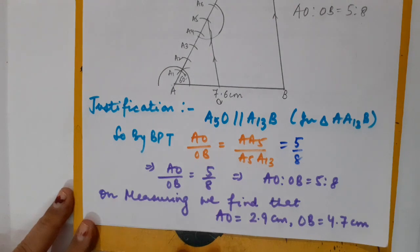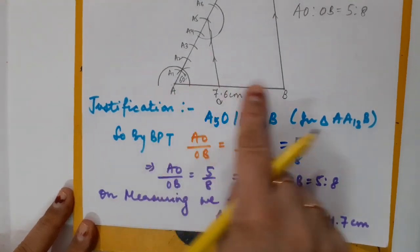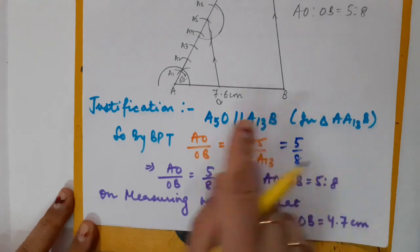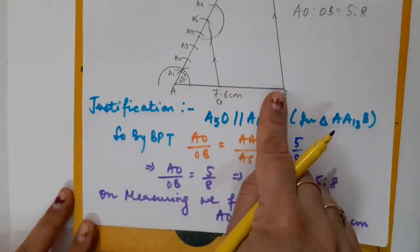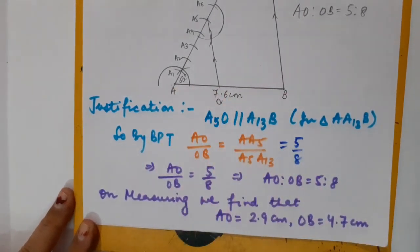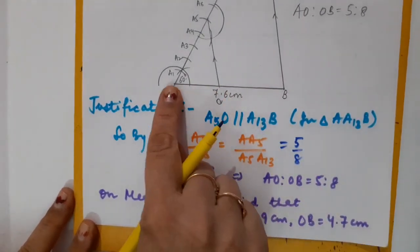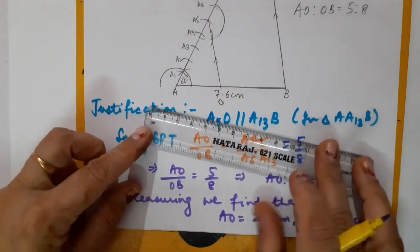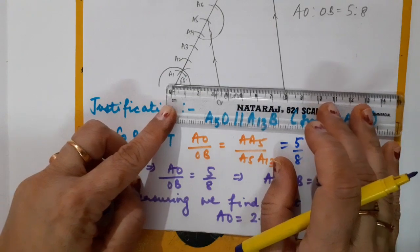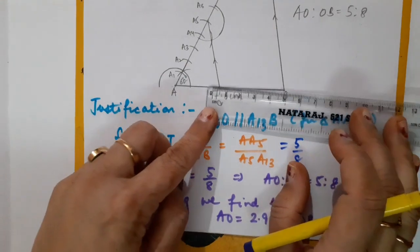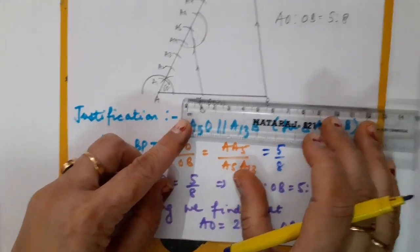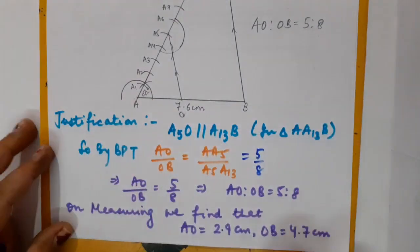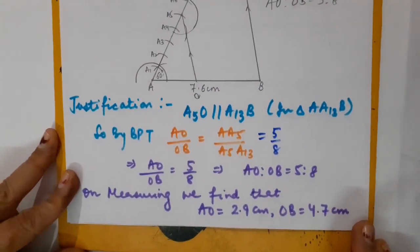When the complete line segment is divided into two parts in ratio 5:8, the measurement of AO is 2.9 cm and the measurement of OB is 4.7 cm.